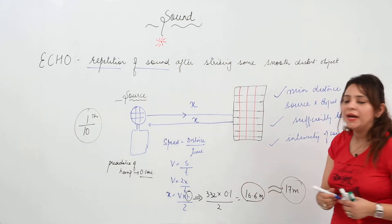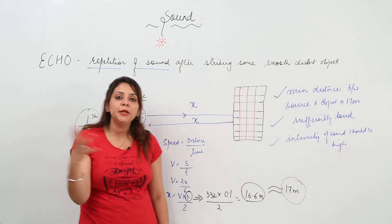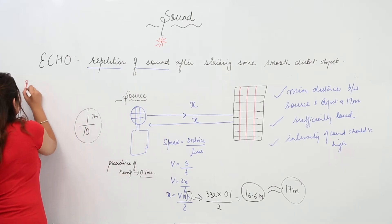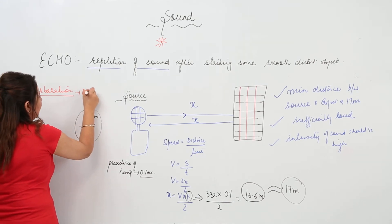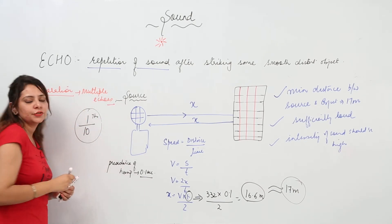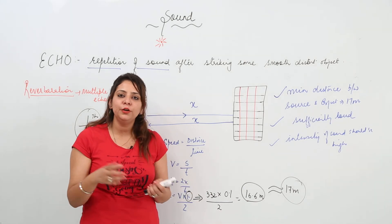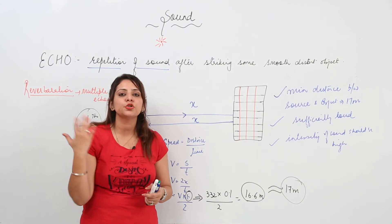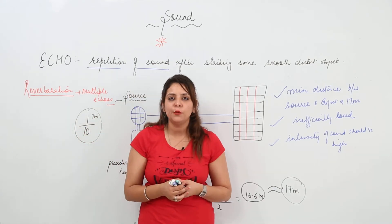Sometimes you are able to hear multiple echoes. This phenomenon of multiple echoes is called reverberation. In an empty hall, you can hear multiple echoes because there is multiple reflection of sound from each corner. Whenever there is reverberation, we are not able to hear the sound clearly.